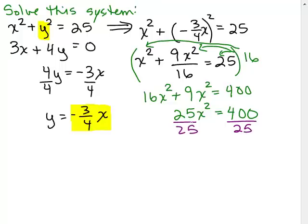So what we get here is when we divide by the 25 is that x squared is 16. And when I solve that, taking square roots of both sides, I get plus or minus 4. So I actually get two solutions for x. One is 4. The other solution is negative 4.